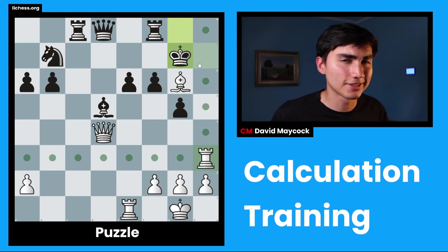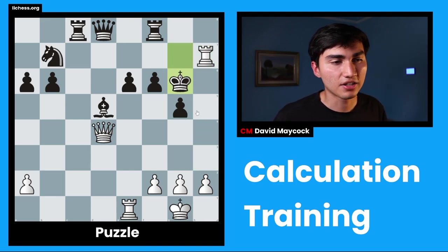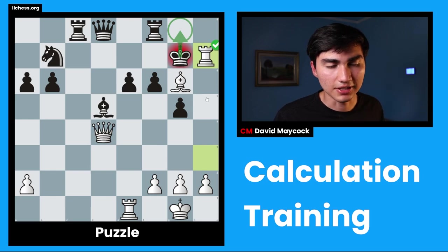I've calculated everything. Let's see if this is the right way. There we go. It is the right way. And king g6 is played.